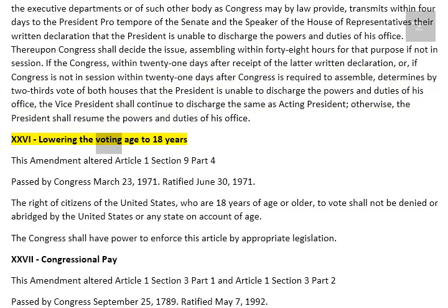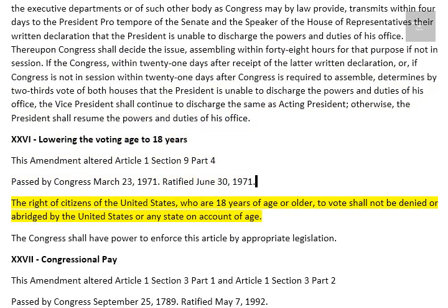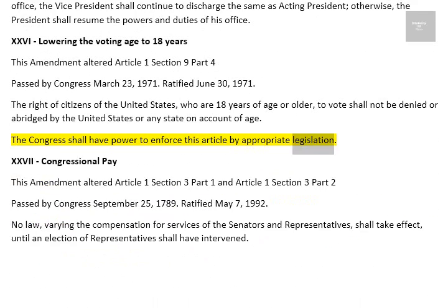Amendment XXVI: Lowering the Voting Age to 18 Years. This amendment altered Article 1, Section 9, Part 4. Passed by Congress March 23, 1971. Ratified June 30, 1971. The right of citizens of the United States who are 18 years of age or older to vote shall not be denied or abridged by the United States or any state on account of age. The Congress shall have power to enforce this article by appropriate legislation.